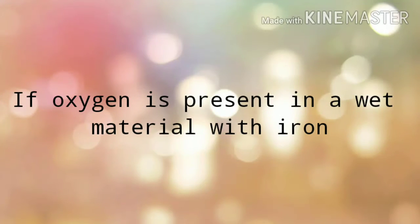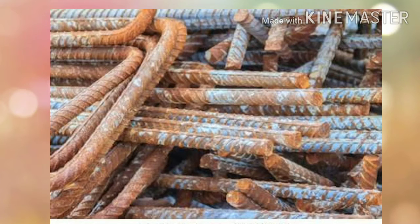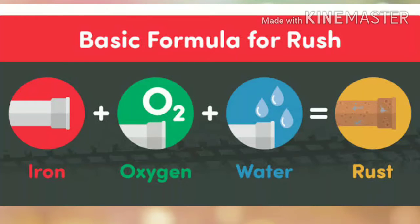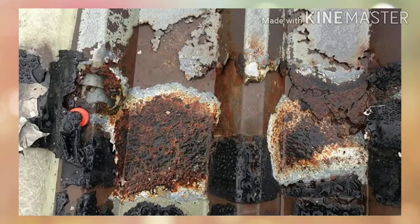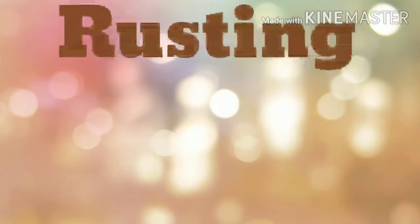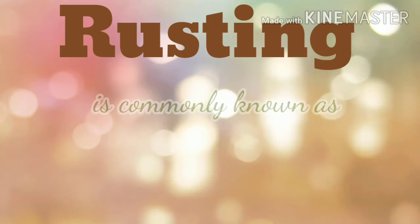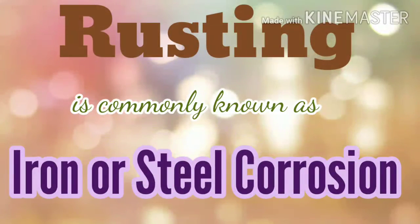If oxygen is present in a wet material with iron, such as a nail or a steel bar, the formation of rust occurs. It only happens when iron, oxygen, and water react with one another. Rust occurs when iron or alloys such as steel corrode. Thus, rusting is commonly known as iron or steel corrosion.